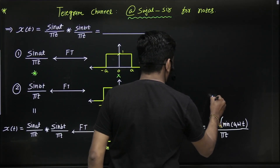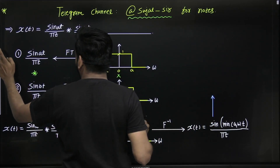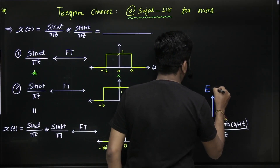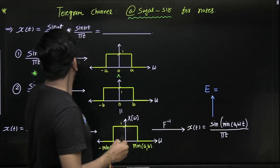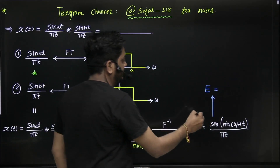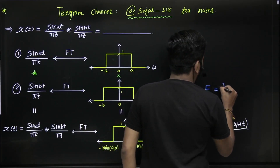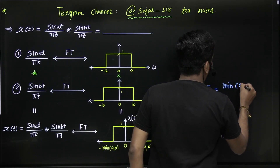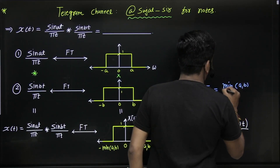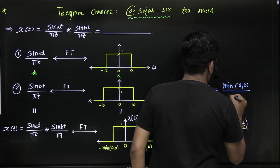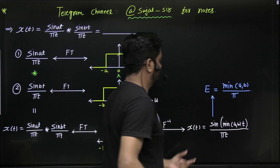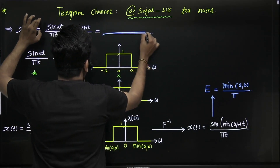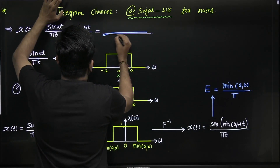Now, what about the energy? In the last class I told you that the energy of sin(at)/πt is simply a/π. So here, the energy of the convolution result is directly min(a, b) divided by π.